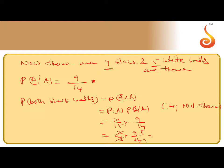2 times 9 is 18, 3 times 14 is 42. That is 3 by 7 is the answer.